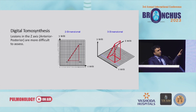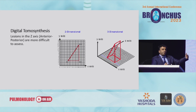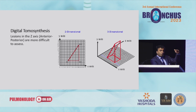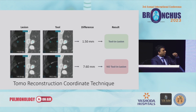The biggest problem with digital tomosynthesis is the Z-axis — when you're going anterior-posterior. Lung lesions located in the center or lateral tend to do better with digital tomosynthesis. In the Z-axis, you're at the edge of the technology. It's blurrier and more difficult to tell where you are.